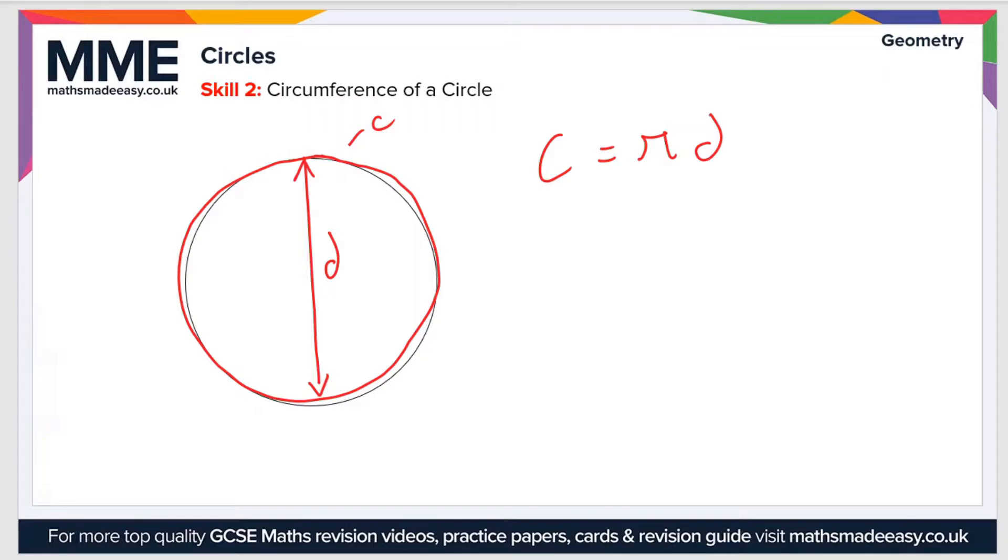So here we can actually see what the definition of pi really is. Pi, if we rearrange the formula, is C divided by d. So pi is the ratio between the circumference and the diameter of a circle.